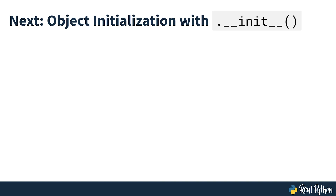Now that you know the steps that Python takes internally to create instances of a given class, you're ready to dig a little deeper into other characteristics of the __init__ and __new__ special methods. In the next section you'll start that off by looking at __init__.